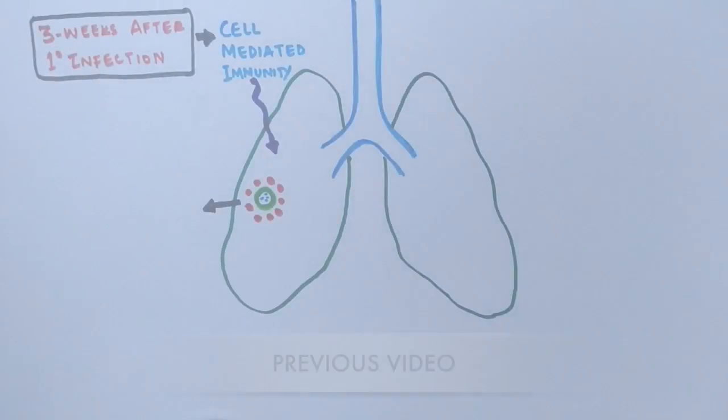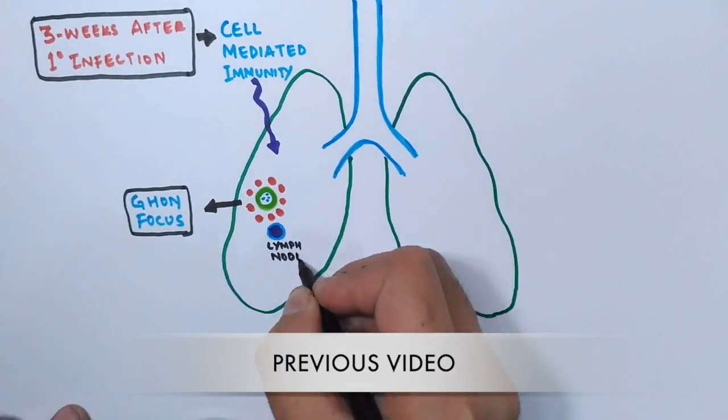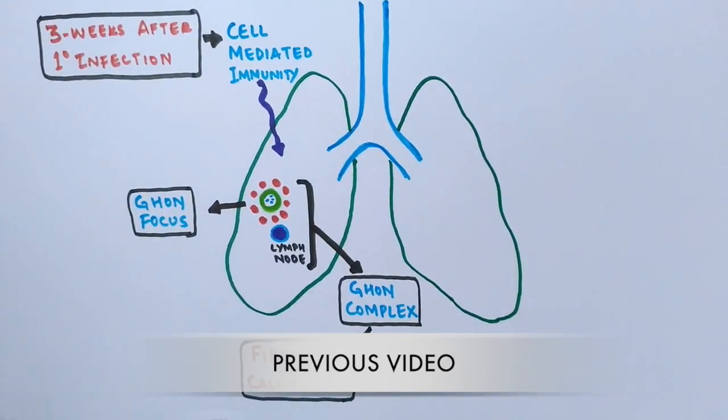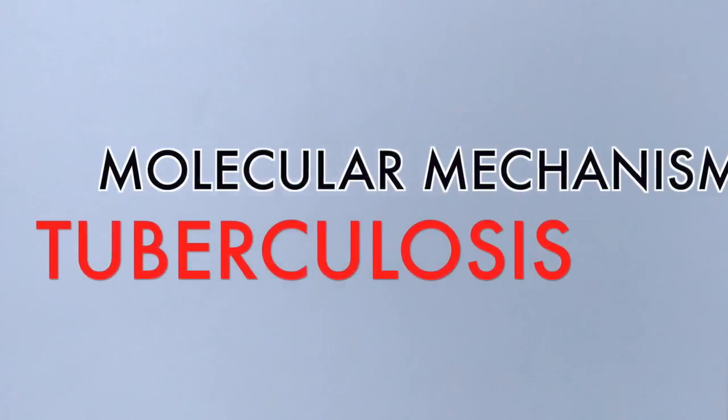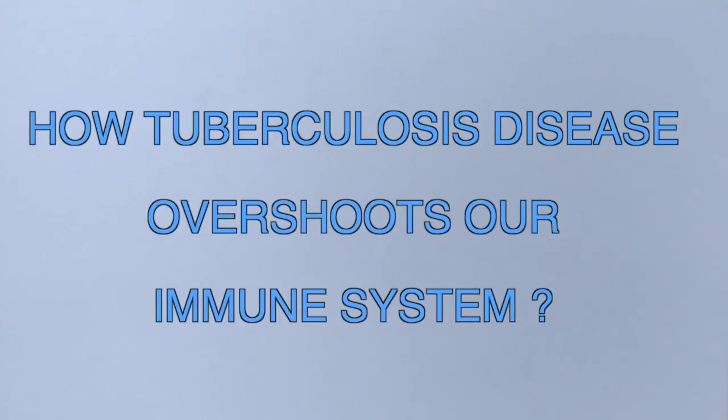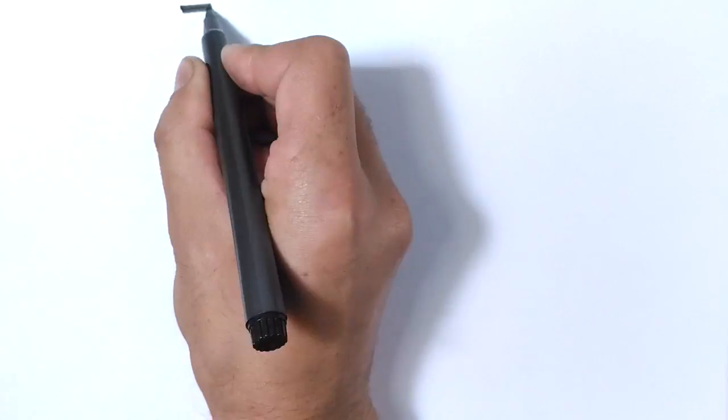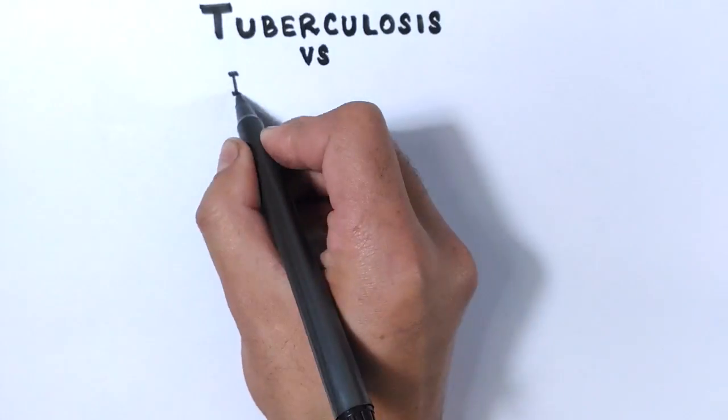In the previous video we discussed the tuberculosis and its pathophysiology. Now in this video we will be discussing the molecular mechanism in tuberculosis disease. Basically we will try to understand how tuberculosis disease fights or interacts with the immune system. That is the tuberculosis versus immune system.